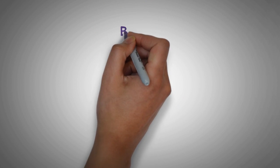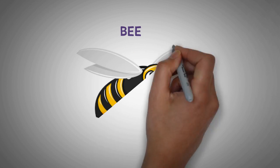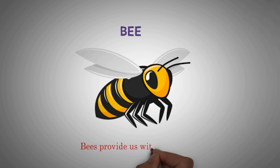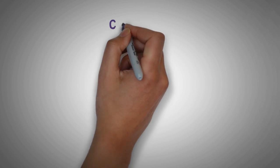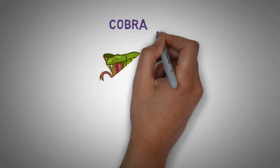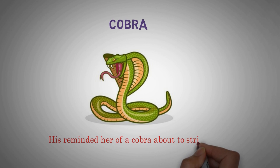Bee. Bees provide us with honey. Cobra. He's reminded her of a cobra about to strike.